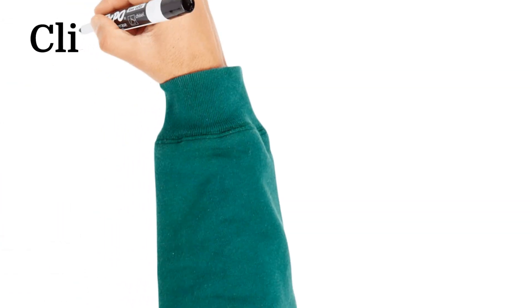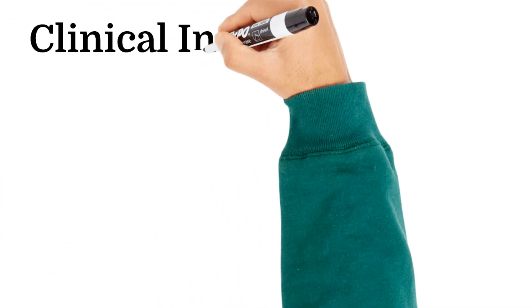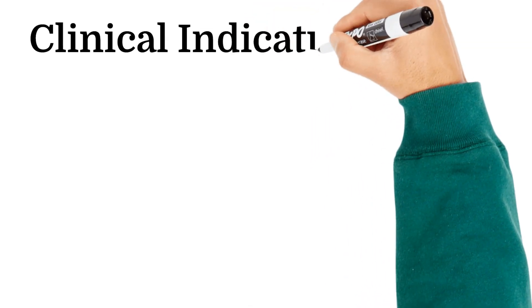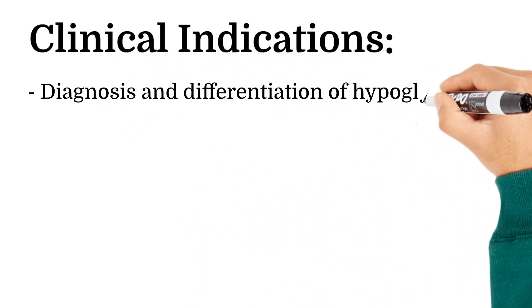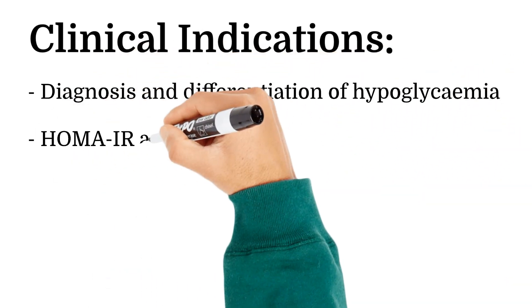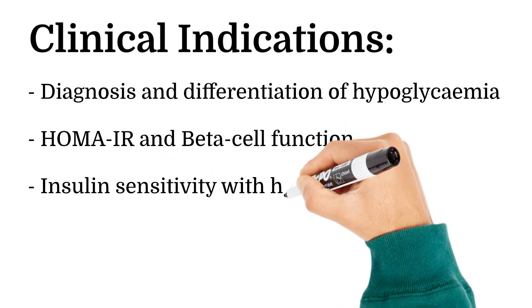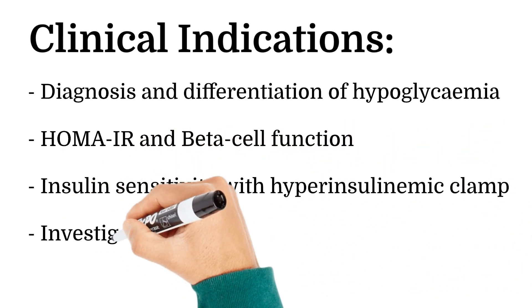Measurement of insulin is indicated in the diagnosis and differentiation of hypoglycemia, in the homeostasis model assessment (HOMA) for quantifying insulin resistance and beta cell function, in determination of insulin sensitivity with the hyperinsulinemic clamp, and in investigation of diabetes and other metabolic conditions.